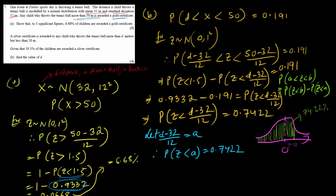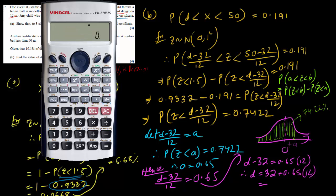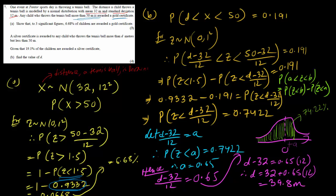Therefore (D − 32)/12 = 0.65. Cross-multiplying gives D − 32 = 0.65 × 12. Hence D = 32 + 0.65 × 12 = 39.8 meters. The context is in meters, so the value of D is 39.8 meters — though the unit can be omitted if only the value is required.